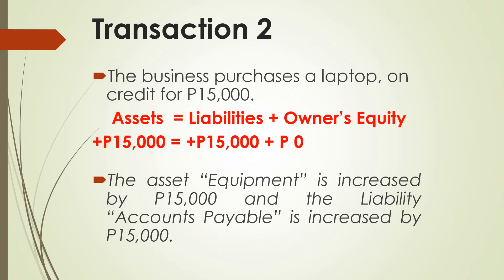Transaction number two: the business purchases a laptop on credit for $15,000. The asset equipment is increased by $15,000 — when you purchase a laptop, that is considered equipment. Since it was a credit transaction, the liability accounts payable also increases by $15,000. There is no impact on owner's equity.